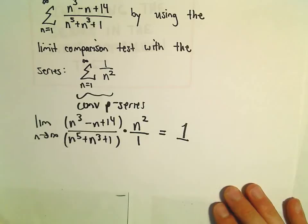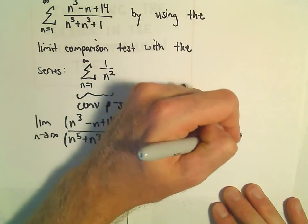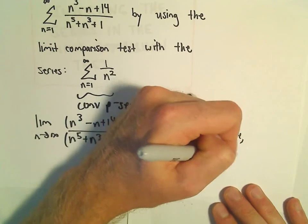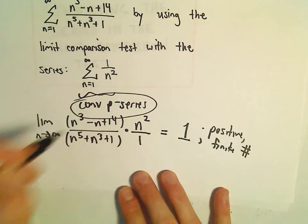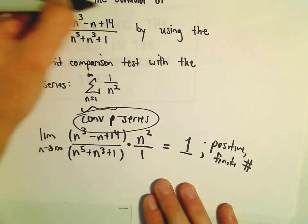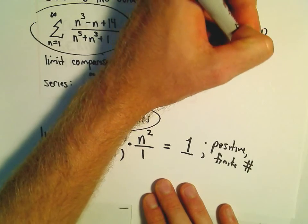So in this case, the limit's going to equal 1, a positive finite number. It says they both do the same thing. Well, since we're using a convergent p-series to compare it to, that means our original series also converges. Let's continue.